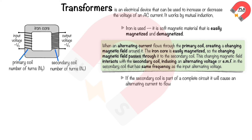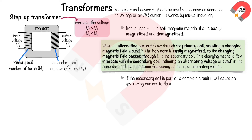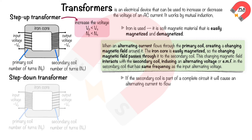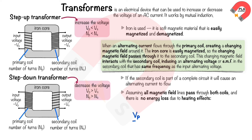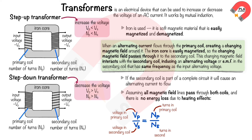There are two types of transformers. A step-up transformer increases the voltage of the input power supply, meaning Vp is less than Vs, and the number of turns on the primary coil is less than the number of turns on the secondary coil. Assuming all magnetic field lines pass through both coils and no energy is lost to heating, the transformer equation applies: Vp/Vs = Np/Ns, where Vp is the primary voltage, Vs is the secondary voltage, Np is the number of turns on the primary coil, and Ns is the number of turns on the secondary coil.